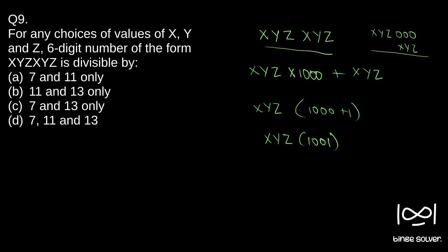So any number of this form is XYZ into thousand one. If you see thousand one, you can easily see it is symmetric and it is divisible by eleven. So thousand one divided by eleven is eleven...